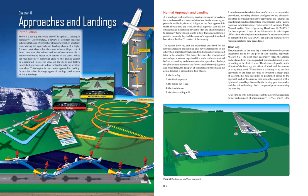The placement of the base leg is one of the more important judgments made by the pilot in any landing approach. The pilot must accurately judge the altitude and distance from which a gradual, stabilized descent results in landing at the desired spot. The distance depends on the altitude of the base leg, the effect of wind, and the amount of wing flaps used.